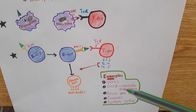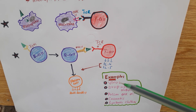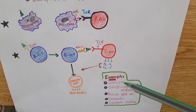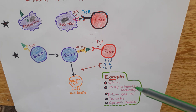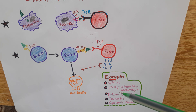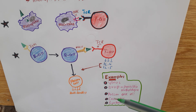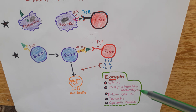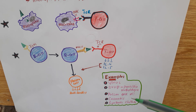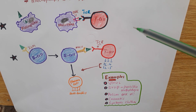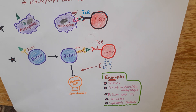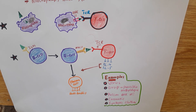The examples for haptens are viruses, as I already told you. And drugs like penicillin, methyl-dopa — they have a small molecular weight. And poison oak oil and some cosmetics and synthetic dyes. These are examples of haptens. But the most common example for hapten is the virus.